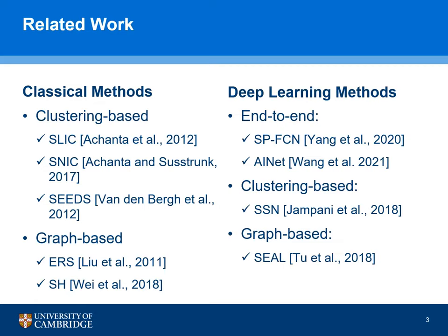In the past few decades, numerous superpixel methods have been proposed in the literature. They can be generally categorized into classical methods and more recently deep learning based methods, both of which can be further categorized into clustering-based or graph-based. Clustering-based methods usually borrow upon the idea of k-means clustering, and graph-based methods treat the superpixel segmentation problem as a graph partitioning one, where pixels correspond to the nodes in a graph.